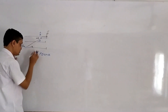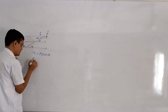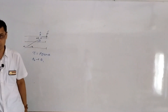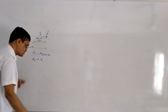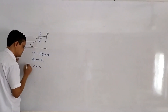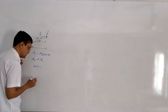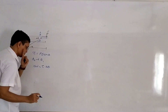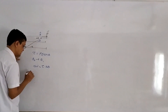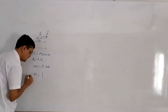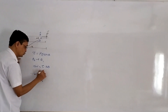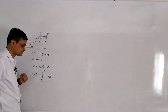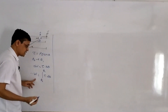Suppose the dipole's angle starts from theta₀ and we need to change it to theta₁. For a small displacement, delta W is equal to torque into delta theta. Total work is equal to integration from theta₀ to theta₁ of torque into d theta.